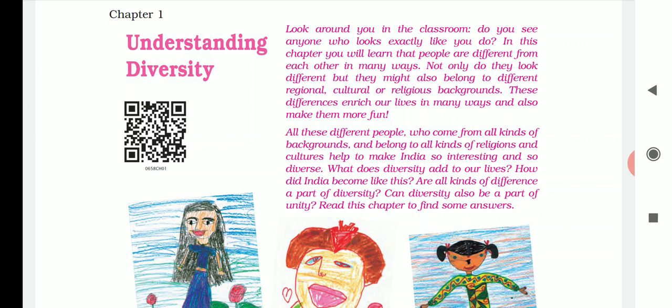In this chapter, you will learn that people are different from each other in many ways. Not only do they look different, but they might also belong to different regional, cultural, and religious backgrounds. Regional means some people are in Tamil Nadu, Andhra Pradesh, Madhya Pradesh, Mizoram, or Assam — different regions. Cultural means differences like South Indian versus North Indian culture. Religious means some people will be Christian, Hindu, Muslim, or Buddhist. These differences enrich our lives in many ways and also make them more fun.